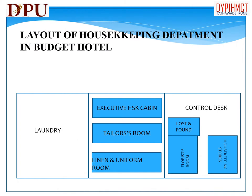This is the layout of a budget hotel. You can see in this layout the layout is very small. It includes: executive housekeeper's cabin, control desk, lost and found room, florist room, housekeeping stores, tailor's room, linen and uniform room, and laundry.